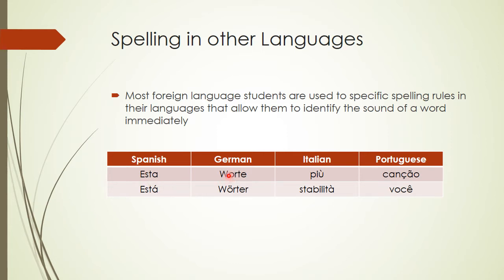In German you have 'Wurtе' and 'Würte' — the umlaut indicates that the O is pronounced differently. In Italian, 'pu' and 'stabilità' — there is an indication by an accent symbol. In Portuguese, 'canção' — the cedilla indicates that the C is pronounced like S rather than K. Another symbol indicates that the E is pronounced in a different way.